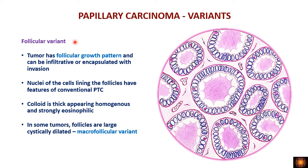The follicular variant has follicles instead of papillae, but these follicles are lined by tumor cells showing features of conventional PTC — nuclear grooves, ground glass nuclei, and pseudo-inclusions are present. The colloid in the follicles is thick, homogeneous, and strongly eosinophilic, called 'chewing gum colloid.' When cystically dilated large follicles are present, it is called the macrofollicular variant.